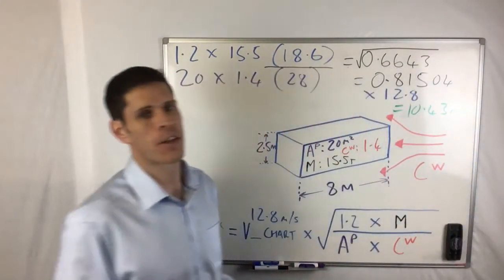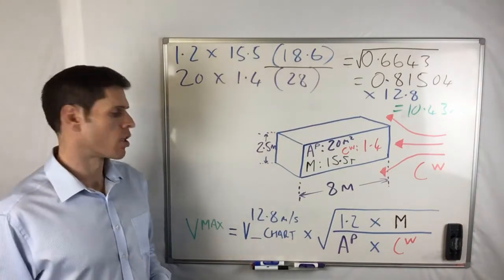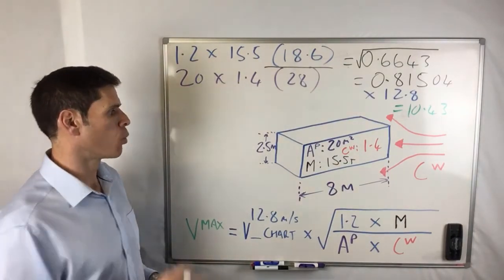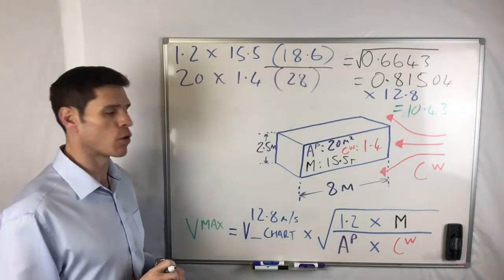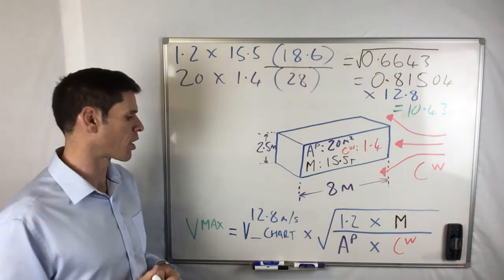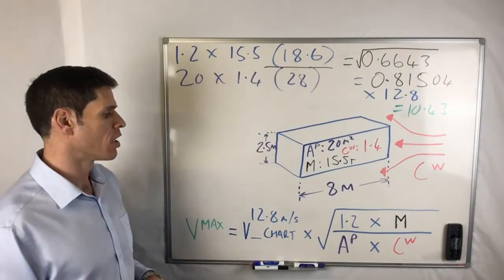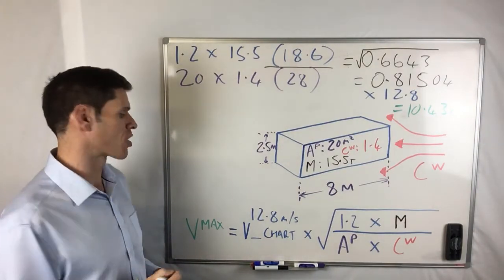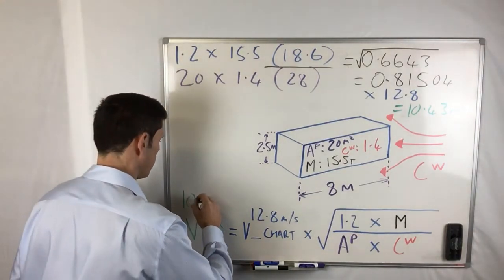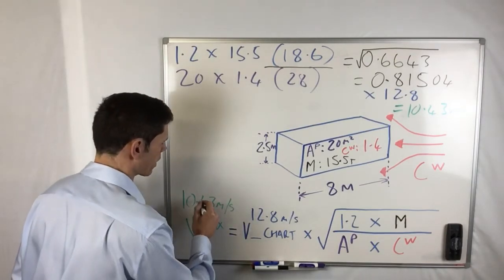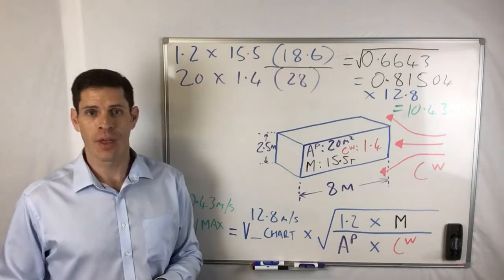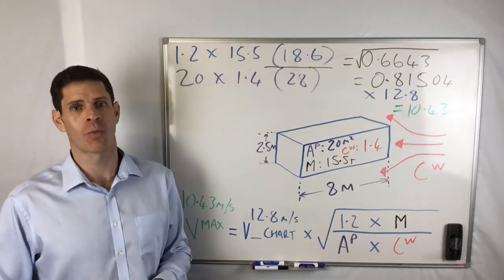Which means the maximum wind speed that we can actually work to with that load on the crane, for the example that we've used, we've considered. We've used a certain crane and that's how we got that. So the maximum wind speed we can actually work to then is 10.43 meters per second, and that's how you work out your maximum wind speed.